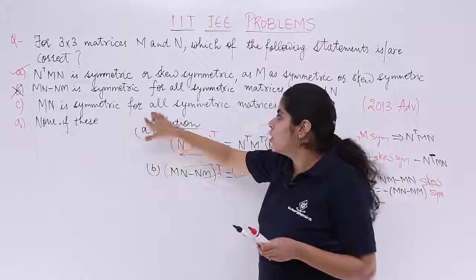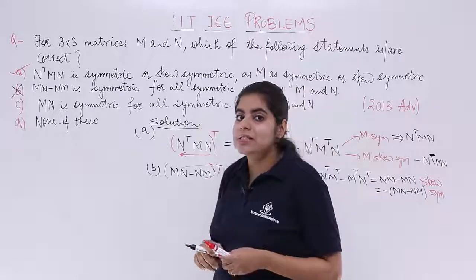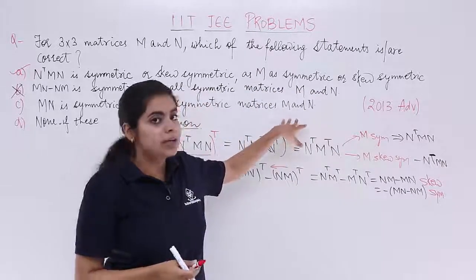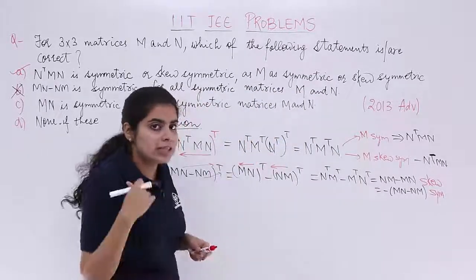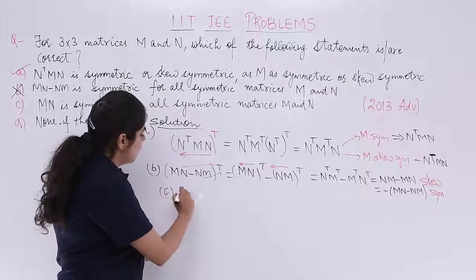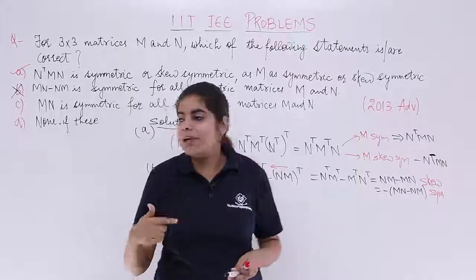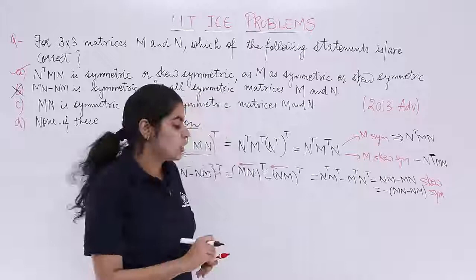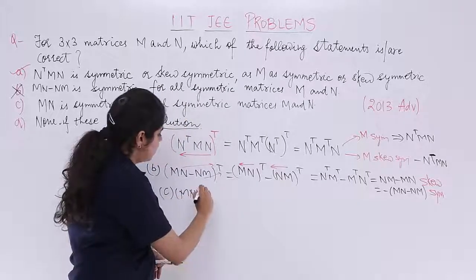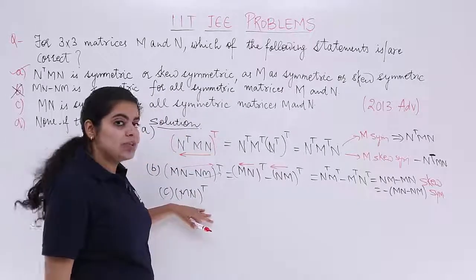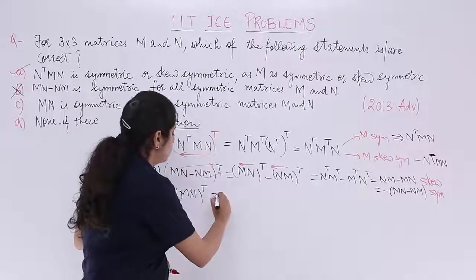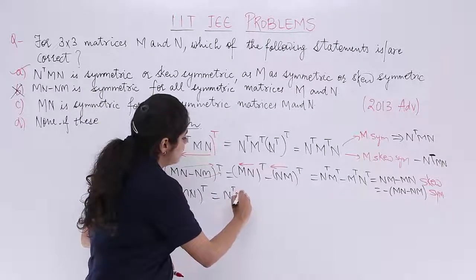Let's go to the third option and then we'll see whether it's correct or not. Third is MN is symmetric for all symmetric matrices N and M. Check it and then we'll see whether it is correct or not. MN, let's check it again. It is MN. MN whole transpose you take.